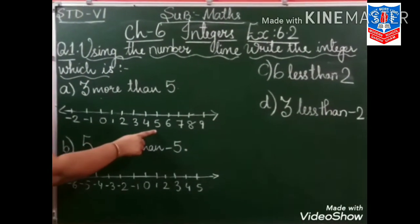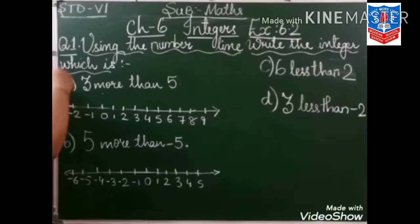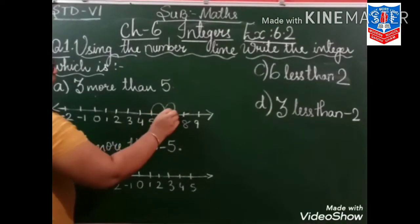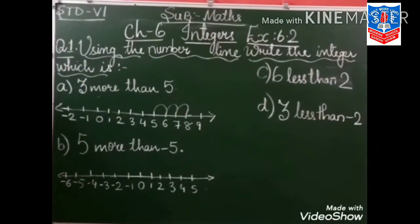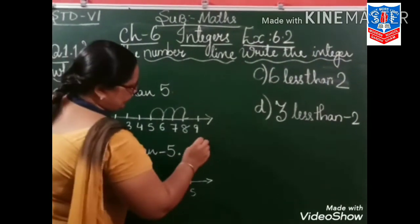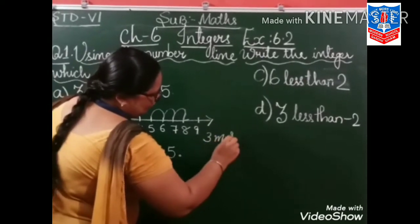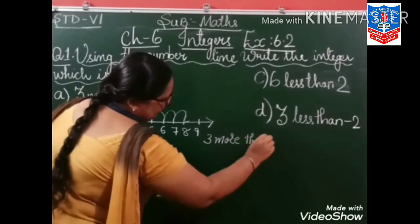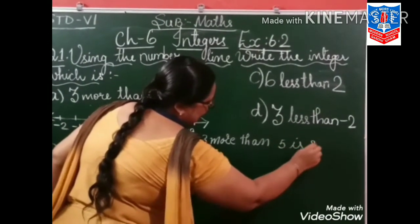Where is 5? Here is 5. 3 more means we will move to the right side: 1, 2, 3. So our answer is 3 more than 5 is 8.